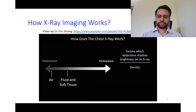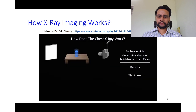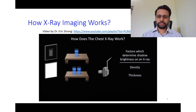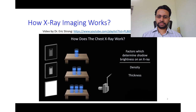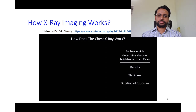The second factor determining shadow brightness is the thickness of the structure being X-rayed. A single relatively thin glass of water produces a very dark image. Two glasses in a row block twice as many X-rays, producing a more gray image. Three glasses produce a brighter image still. In summary, the thicker the structure, the brighter it will appear on the X-ray film. The third factor is the duration of exposure, which is relevant mainly when trying to understand a technical error in image acquisition.